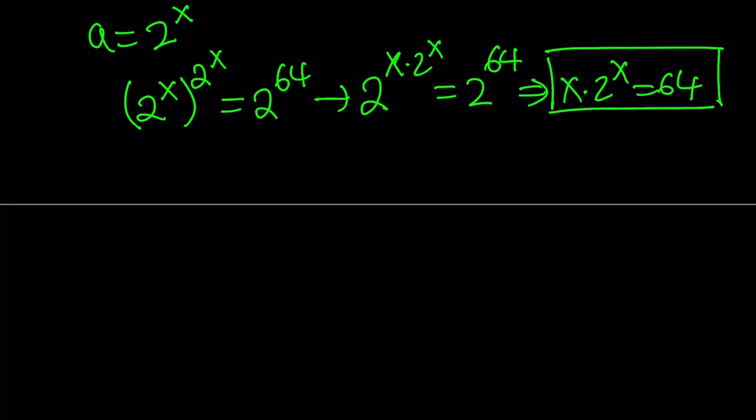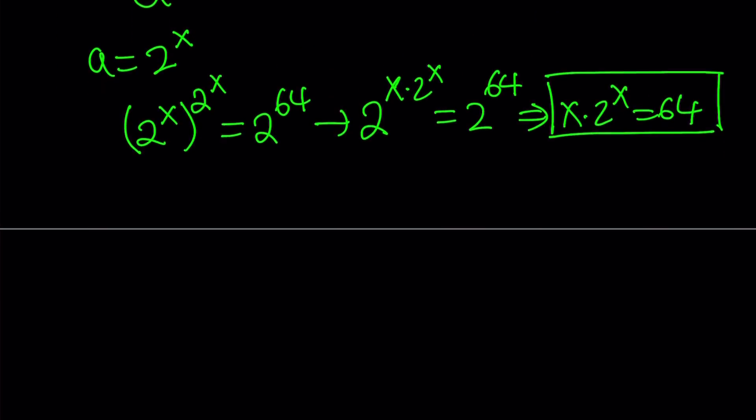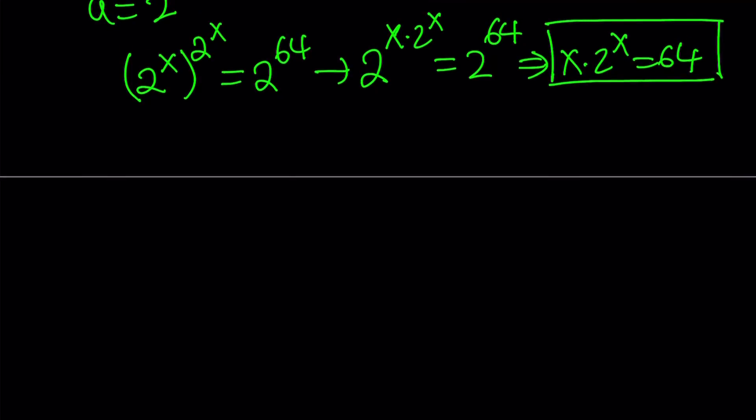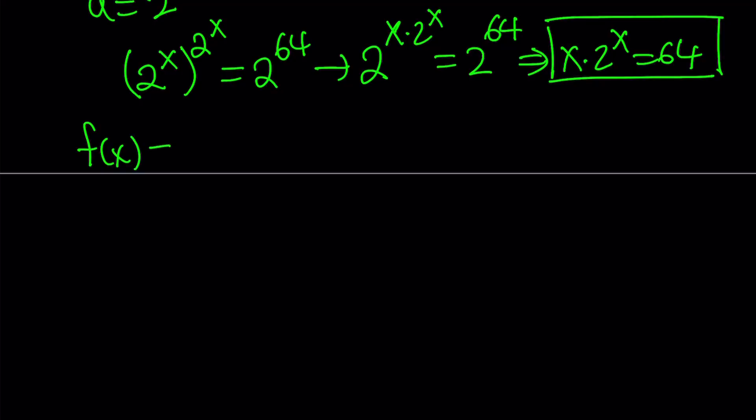So now we're going to be looking at a function here. We're going to do a little bit of calculus, looking at the increasing and decreasing intervals for this function. The function is f(x) = x·2^x. Let's go ahead and differentiate this function using the product rule. f'(x) is 1·2^x plus 2^x·ln(2)·x.